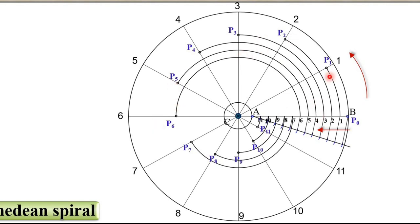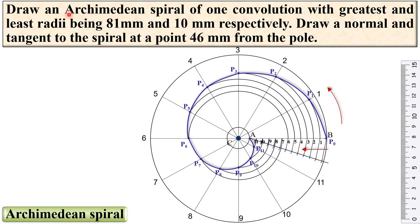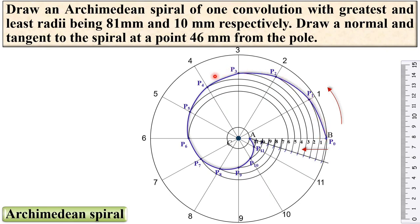After getting all these points, join all of them by a smooth curve — draw the smooth curve passing through all these points. That will be your first answer: the Archimedian spiral for one convolution. You can see it is exactly one convolution — start from here, rotated 360 degrees, up to here. That is called one convolution. In the examination, it can also be asked as one and a half convolution or half convolution, and you have to draw accordingly.